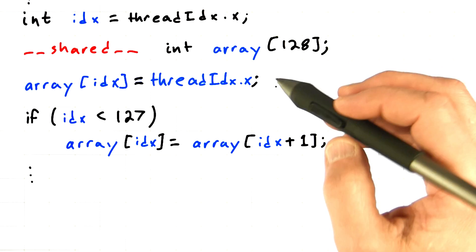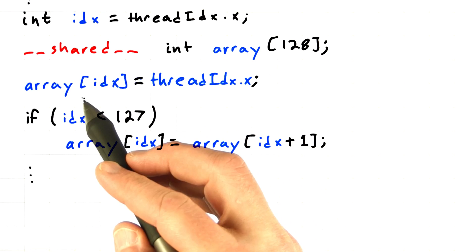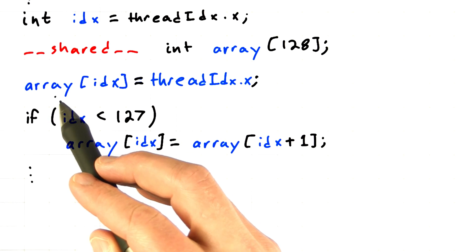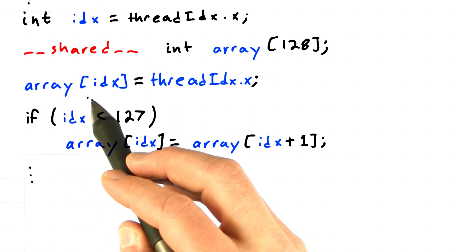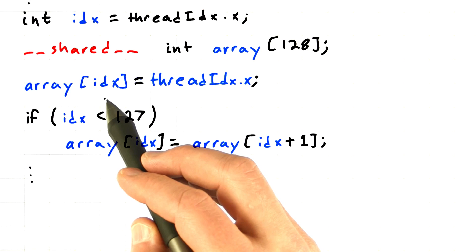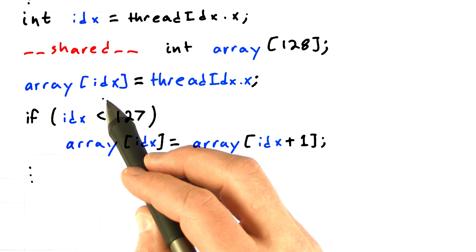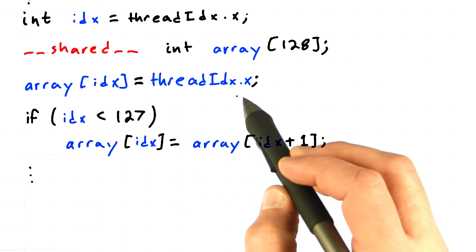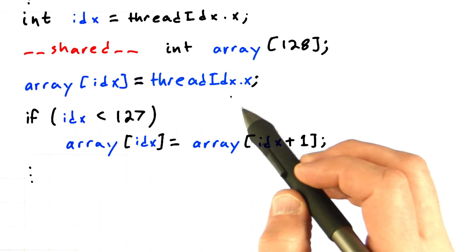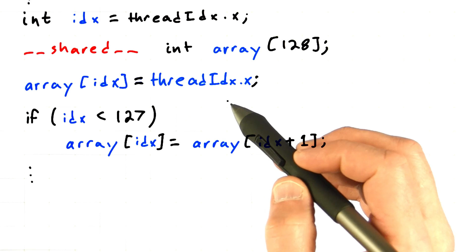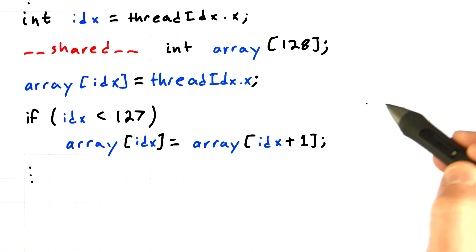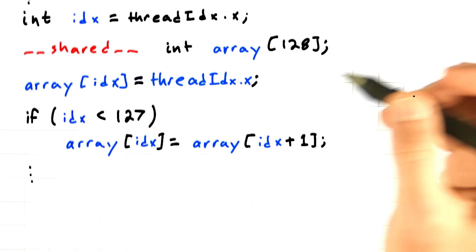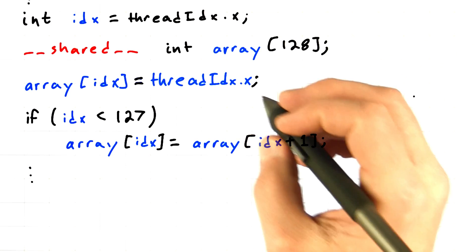And now we're actually going to do something. Every thread is going to write into a single element of the array corresponding to its thread index. And the thing that it's going to write into that element of the array happens to be its own thread index. So this is going to load up that array with 1, 2, 3, 4, and so on. And that's just to put something in the array that we can play with.